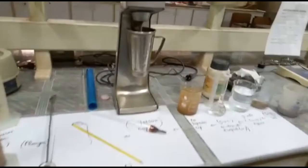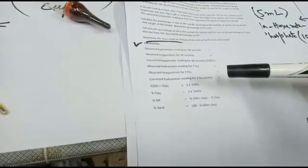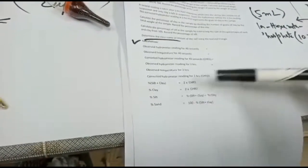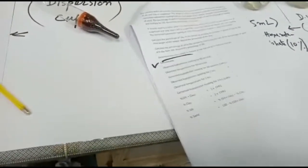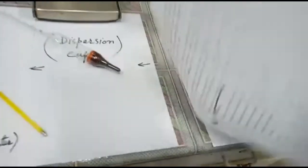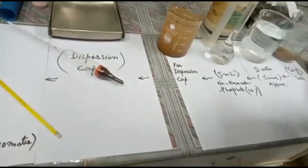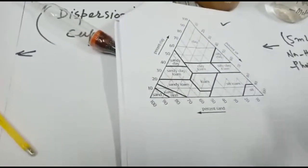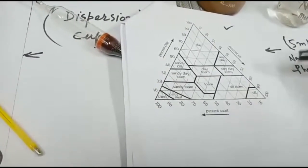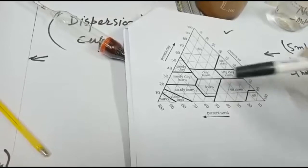We use this formula, these calculations to get the percent reading of sand, silt, and clay. Then we use these readings, we plot these readings on this texture triangle. We use this texture triangle to find out the texture class.